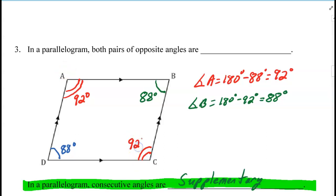So that's also 92 degrees, leading to the point in number 3, that the opposite angles in a parallelogram are congruent.